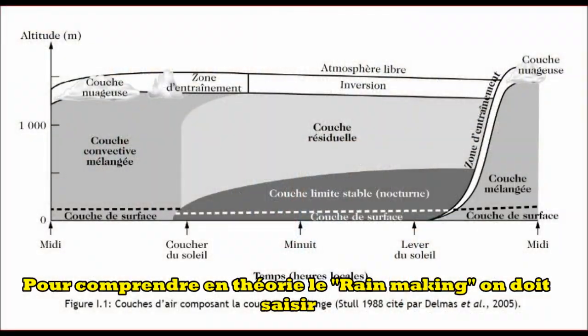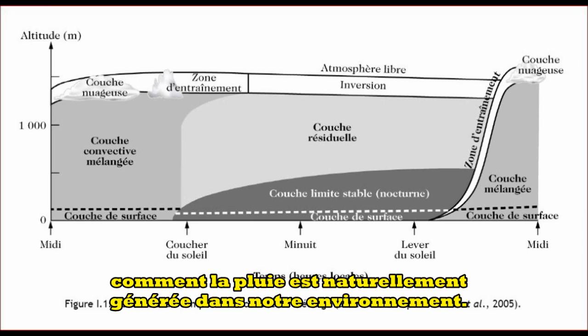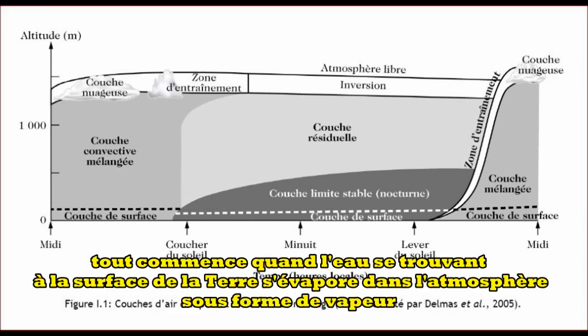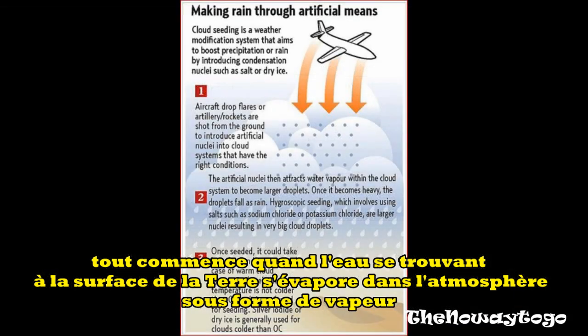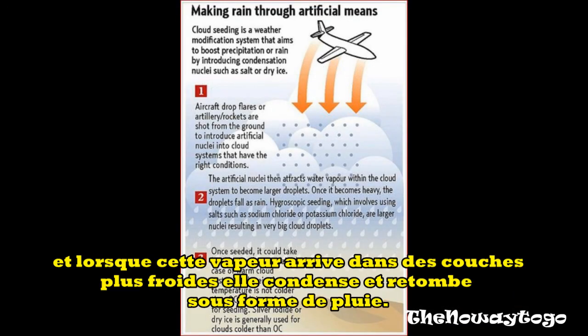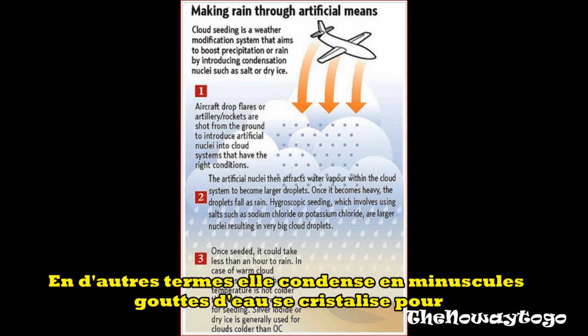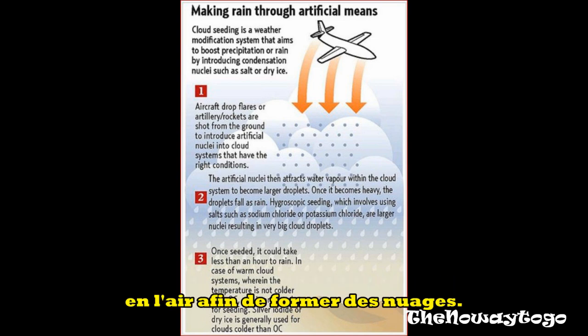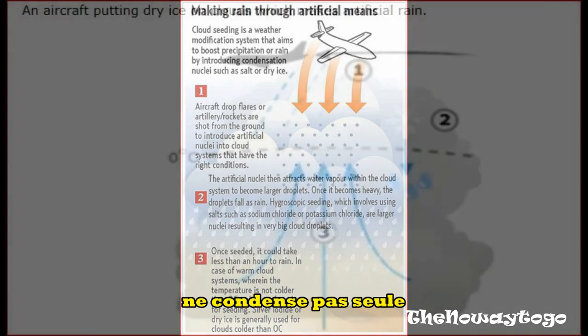To understand the theory of rainmaking, you first have to grasp how rain arises naturally in the environment. It all starts when water down on the Earth's surface evaporates and rises as water vapor into the atmosphere. When the vapor hits cooler layers of air, it reverts to its liquid phase — in other words, it condenses. Countless minuscule water drops, or ice crystals, form, drifting through the air to form clouds.